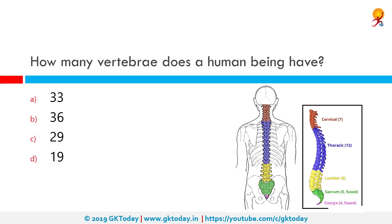How many vertebrae does a human being have? The correct answer is 33. The vertebral column usually consists of 33 vertebrae: 24 are presacral vertebrae, among which 7 are cervical, 12 thoracic, and 5 lumbar, followed by the sacrum in which 5 are fused sacral vertebrae, and the coccyx with 4 frequently fused coccygeal vertebrae. You can see all this in the diagram on the right side of your screen.